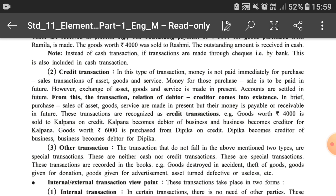For example, if we purchase machinery worth rupees 50,000 and do not make payment at the time of purchase — paying after six months — we can utilize that machinery immediately but payment is made later. From this, the debtor-creditor relation comes into existence. If we sell goods to a third party on credit, they become our debtor from whom we receive money in future. If we purchase goods on credit, they become our creditors to whom we pay money in future.